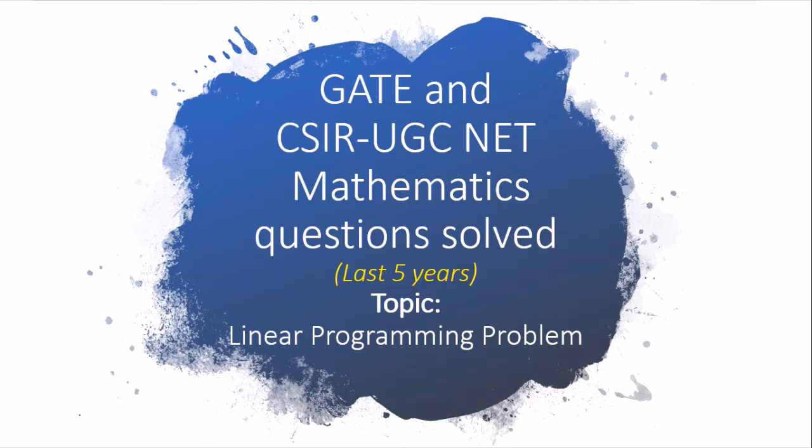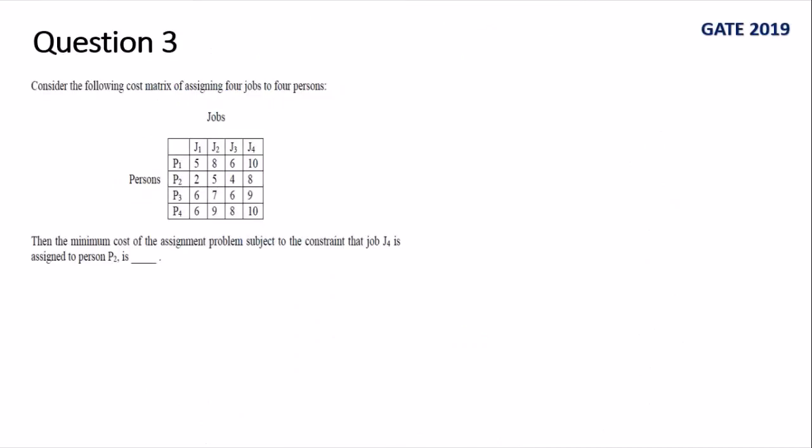Let us begin with Question 3 in this series. This question was asked in GATE 2019 exam. Read the statement of the question: consider the following cost matrix of assigning 4 jobs to 4 persons. It is clear from here that it is an assignment problem question.